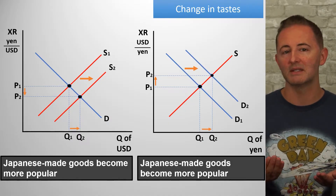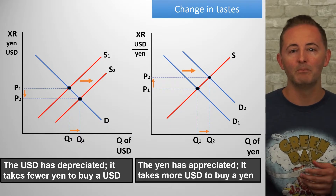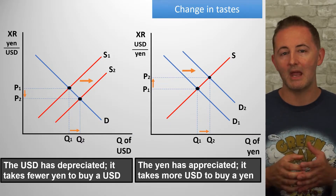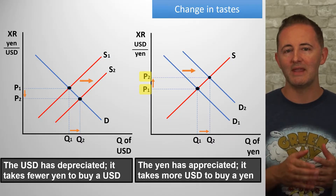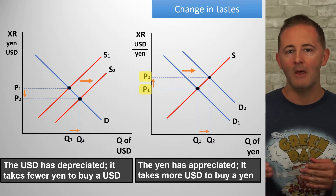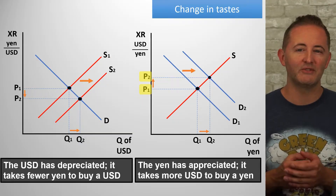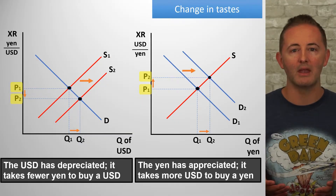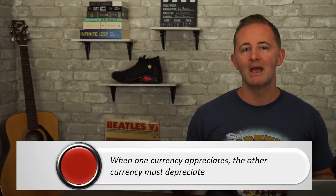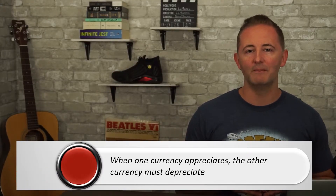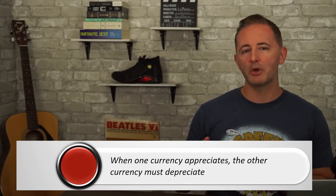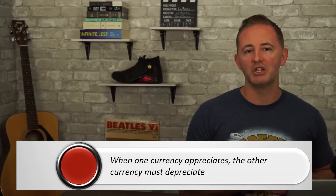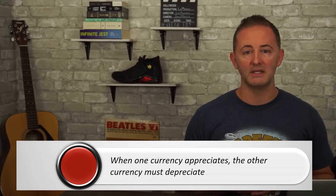This is a good time to point out: the yen appreciated, meaning its value increased — it now takes more dollars to buy a yen after the shift. The dollar has depreciated, so its value decreased — it takes fewer yen to buy a dollar now. When one currency appreciates, the other must depreciate, because they are priced in terms of each other. A yen appreciation is the same as a dollar depreciation when those are the only two currencies.